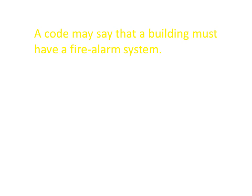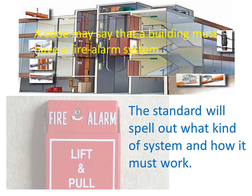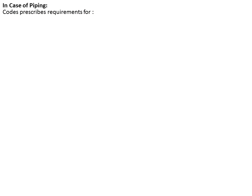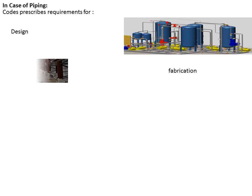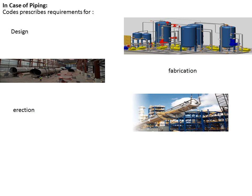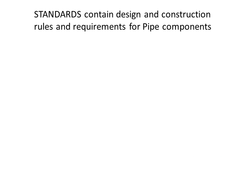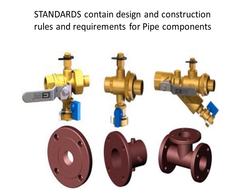A code may say that a building must have a fire alarm system, and the standard will spell out what kind of system and how it must work. So in the case of piping, codes prescribe requirements for design, fabrication, erection, examination, tests and inspection. Standards contain design and construction rules and requirements for pipe components, various process services, materials, and equipment.